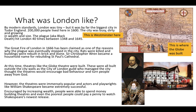The Great Fire of London in 1666 has been claimed as one of the reasons why the plague was eventually stopped in the city — rats were killed and buildings were rebuilt in brick and stone. Christopher Wren became a household name by building St Paul's Cathedral. At this time, theatres like the Globe Theatre were built — all built outside the city walls, as the City of London Guild thought theatres would encourage bad behaviour and turn people away from God. The theatres were immensely popular, and playwrights like William Shakespeare became extremely successful. Even the poorest people could pay a penny to watch Shakespeare's newest release.